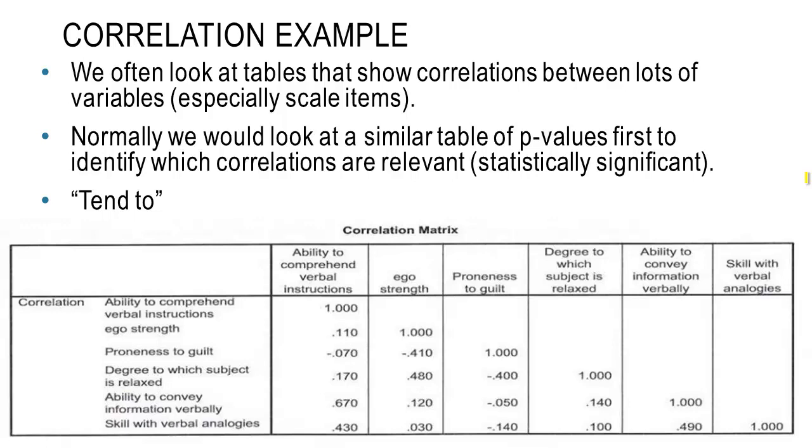So quite often we might have a correlation table. Correlation table will show me the correlations between a whole lot of variables. And this is particularly common when you are presented with scale items. But you may also have other variables in there as well. We may also have another matching table of p-values. If we had a matching table of p-values, we'd start by identifying the statistically significant ones. Then we would look at our table of correlations. In this case we're just going to look at the correlations.